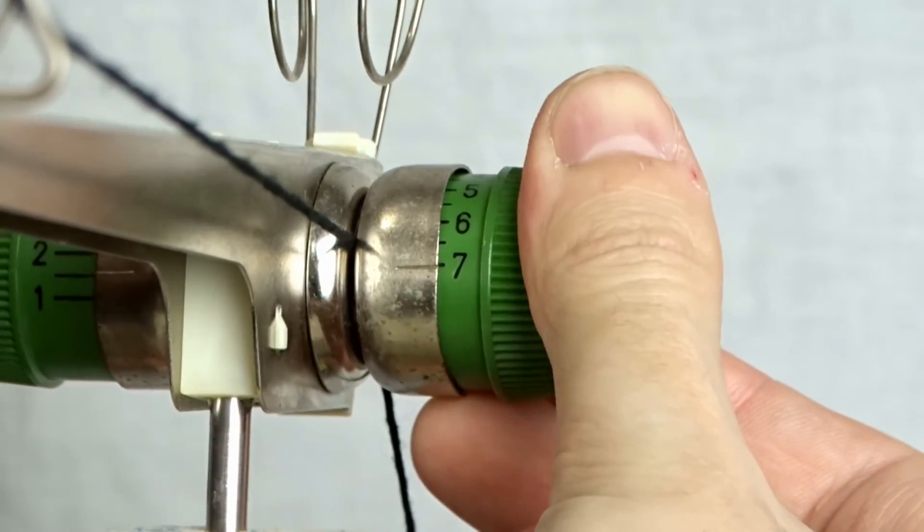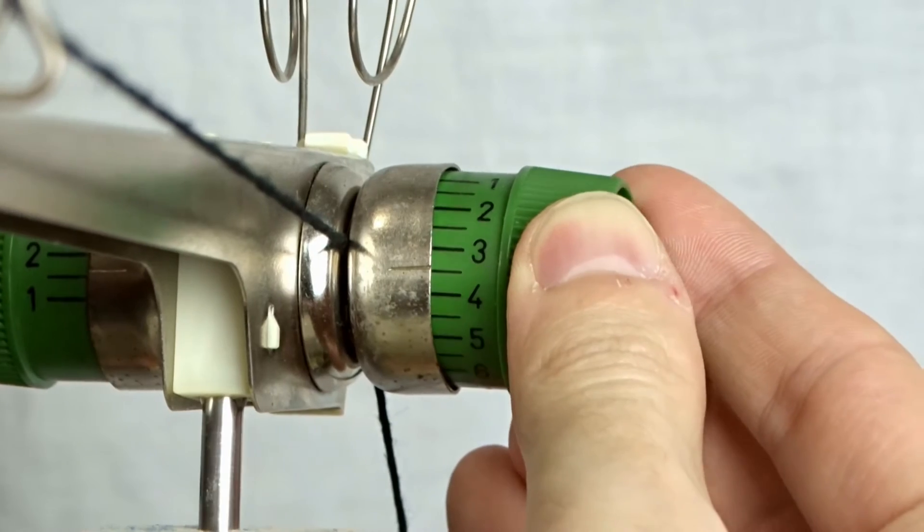Lower the yarn tension by one number or by two clicks when you are using the device.